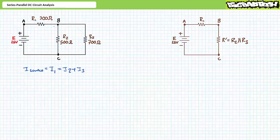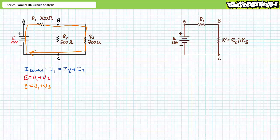Let's now look at voltage distribution within this circuit using Kirchhoff's voltage law. For this loop in red, the rise E is equal to the sum of voltage drops, where E equals V1 plus V2. Similarly, for this loop in orange, the rise E is equal to the sum of drops, where E equals V1 plus V3. Finally, for this loop in yellow, the rise V2 is equal to the drop V3. This analysis again confirms that R2 is in parallel with R3, a simplification I'm calling R single prime, where R single prime is in series with R1.